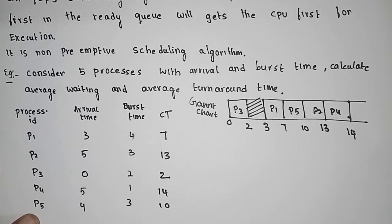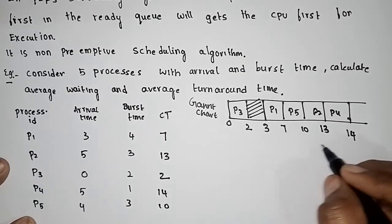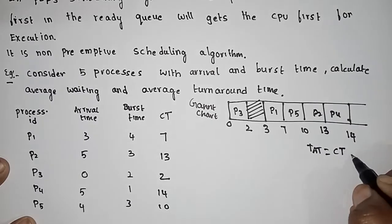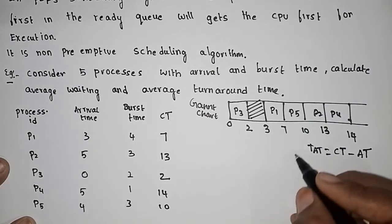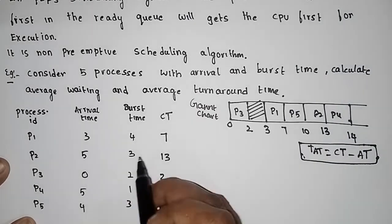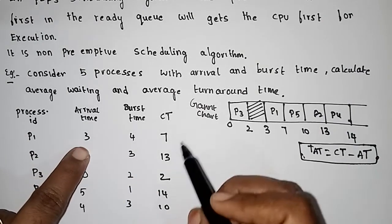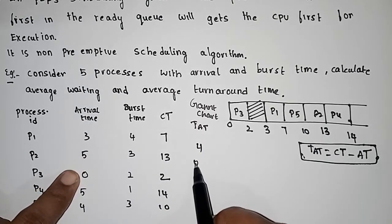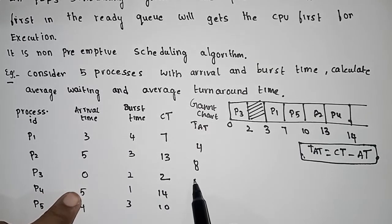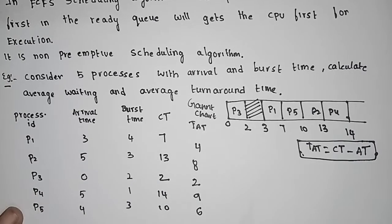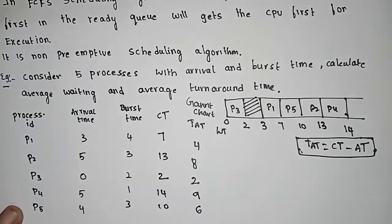Now calculate turnaround time. Turnaround time equals completion time minus arrival time. This is the formula. So P1: 7 minus 3 equals 4. P2: 13 minus 5 equals 8. P3: 2 minus 0 equals 2. P4: 14 minus 5 equals 9. P5: 10 minus 4 equals 6.